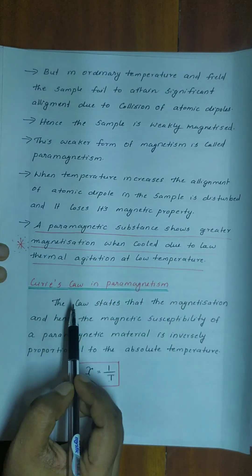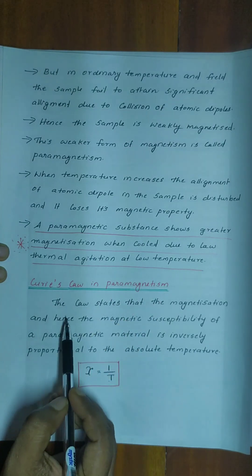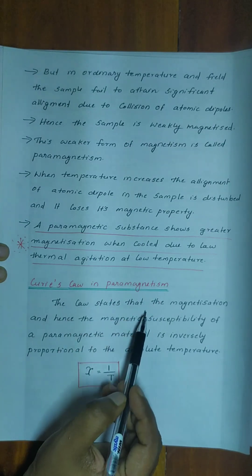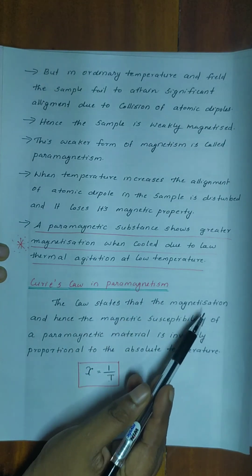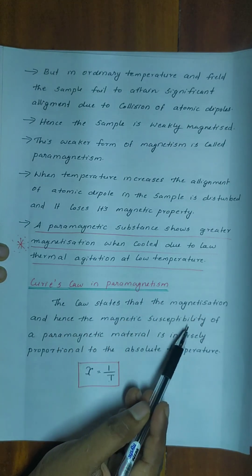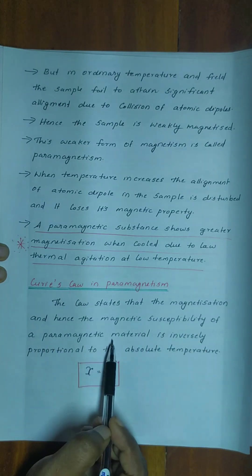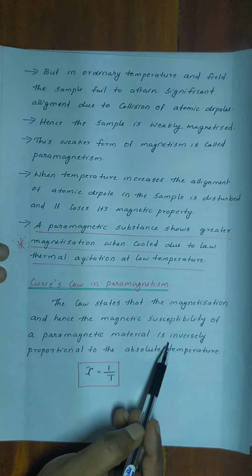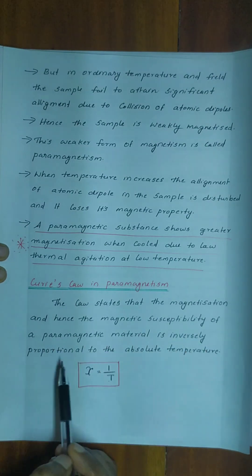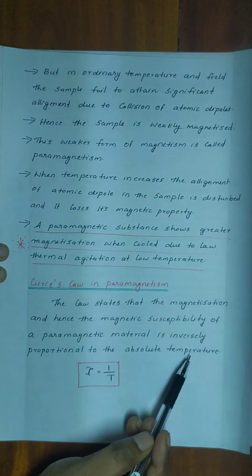Now let's discuss Curie's law in paramagnetism. The law states that the magnetization, and hence the magnetic susceptibility of a paramagnetic material, is inversely proportional to the absolute temperature.